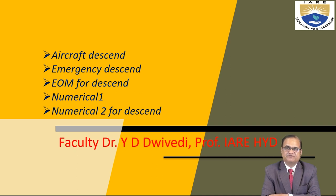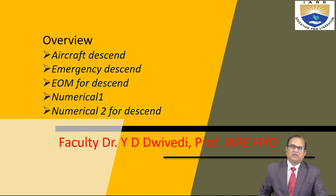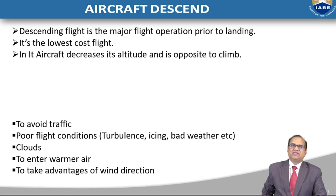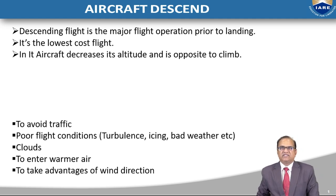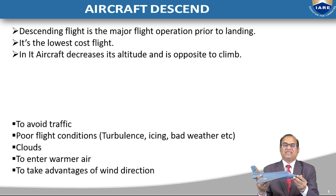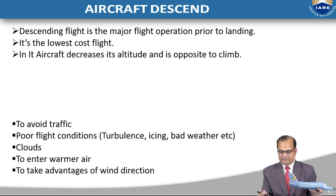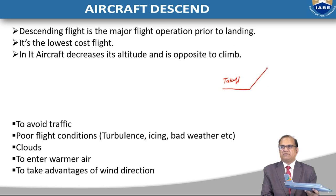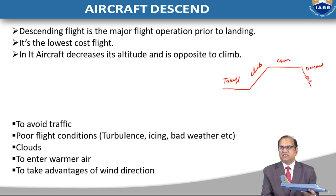In today's lecture I am going to discuss aircraft descent, emergency descent, the equation of motion for descent, and two numerical problems for descent. Previously we have seen what descent is — descending flight is the major flight operation prior to landing. If we look at the phases of flight, we have takeoff, then climb, then cruise, then descent, then loiter, and finally landing.